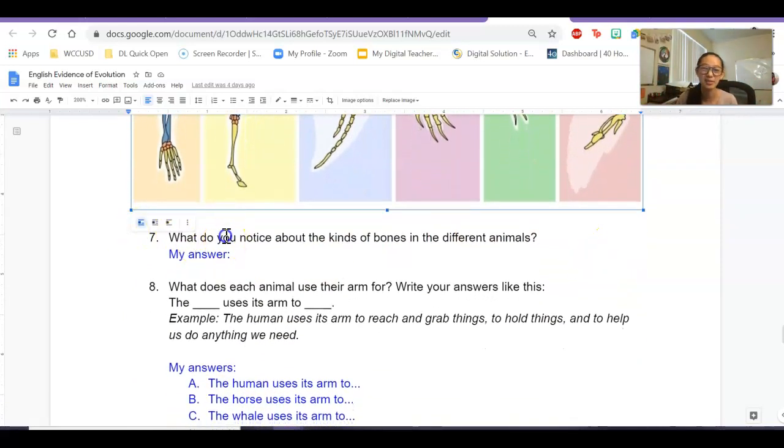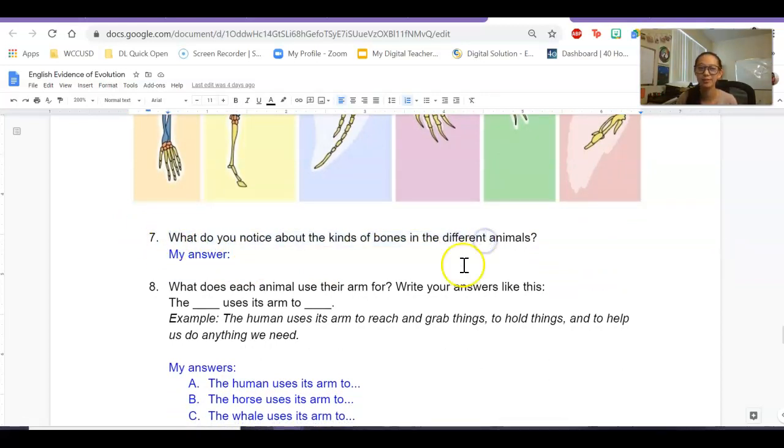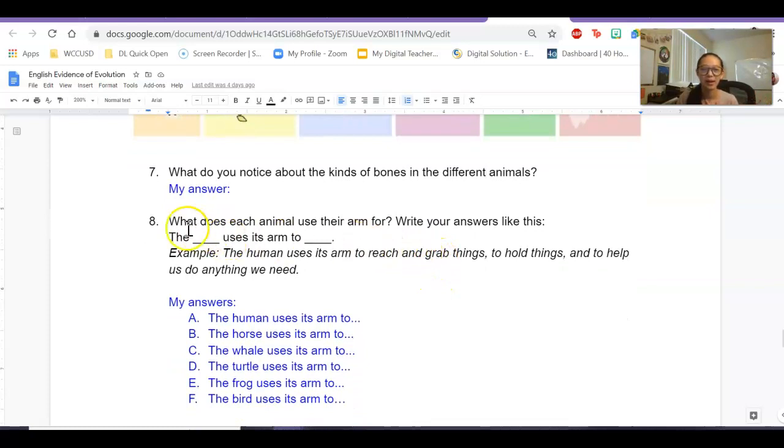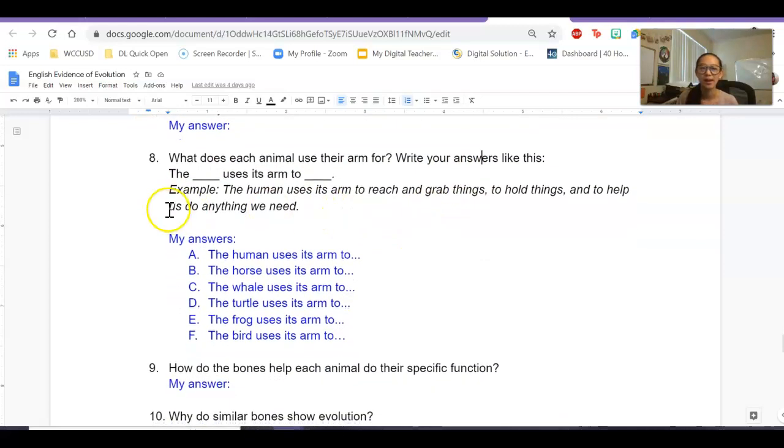So you're going to answer these questions about the bones. What do you notice about the kinds of bones? Are they the same or different? Do they all have the same bones? What about the shape? Is the shape the same? What does each animal use their arm for? And again, don't write anything here. It's the example you're going to write on the blue part.